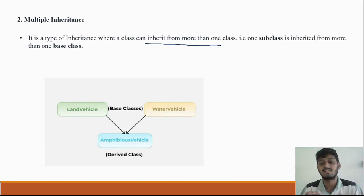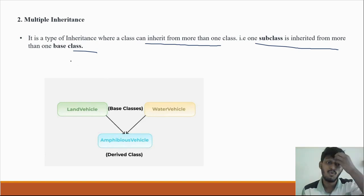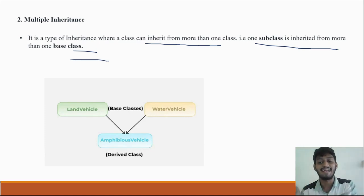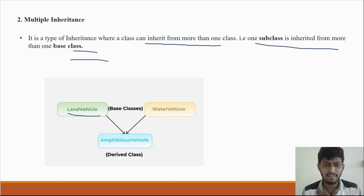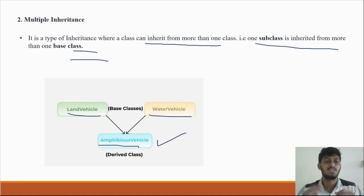In multiple inheritance, one class is inherited from more than one base class. Subclass means derived class. More than one base class is used and we can make one derived class from them. For example, land vehicle is a base class and water vehicle is a base class, and these two base classes are used to derive one class: amphibious vehicle.